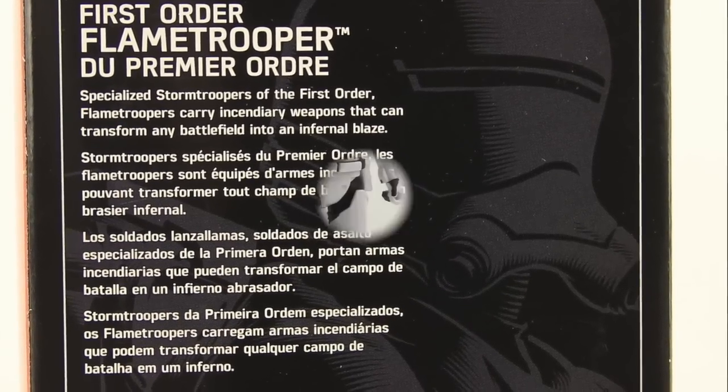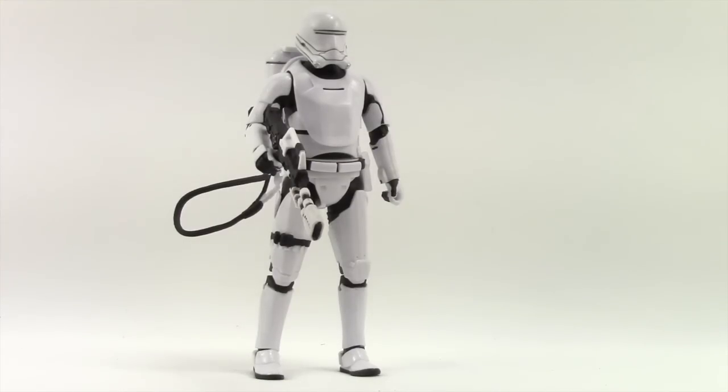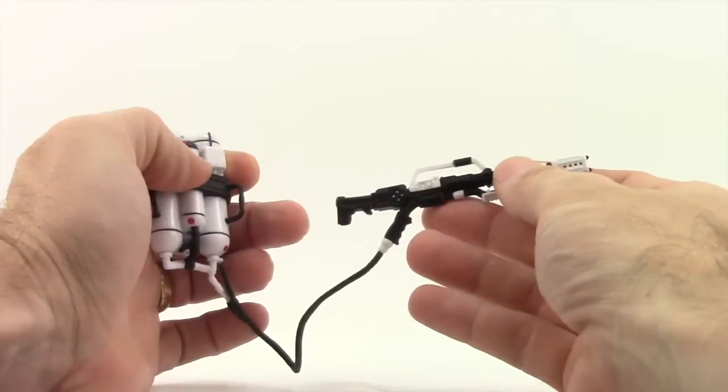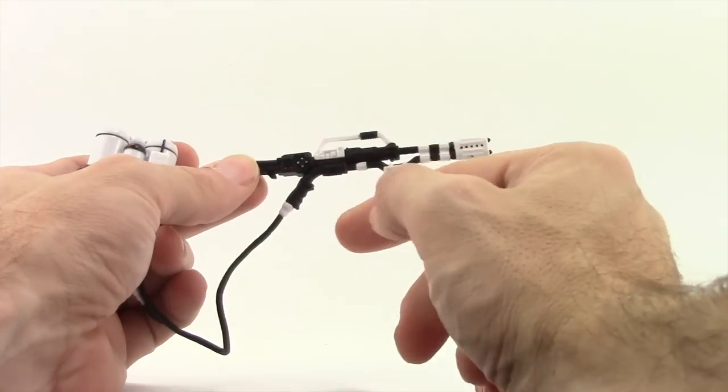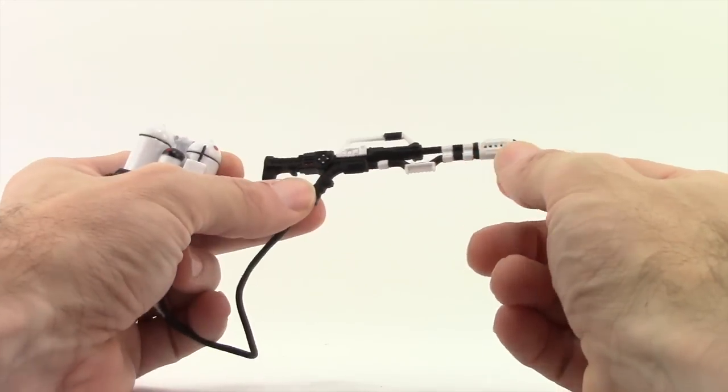Let's get this open and take a look at what's inside. Here's the figure outside of the packaging. Before we look at the figure itself, let's first take a look at the accessories. This figure comes with a flamethrower done in black and white plastic.